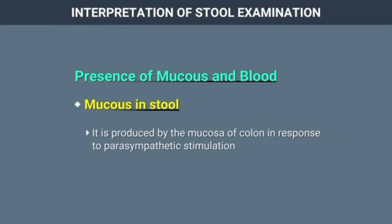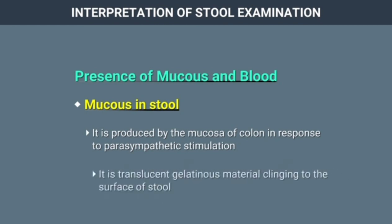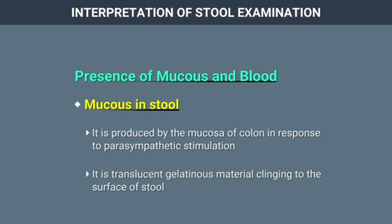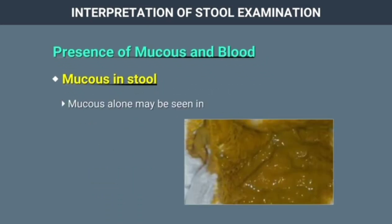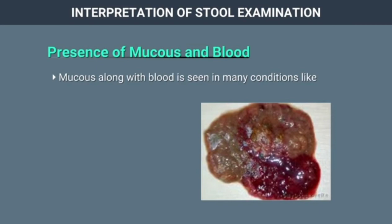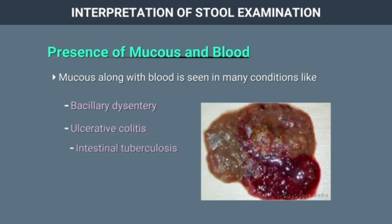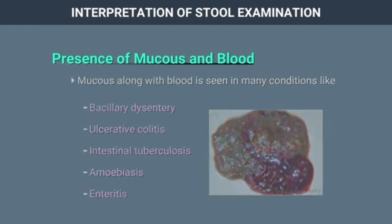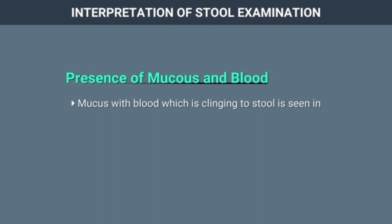Presence of mucus and blood: Mucus is produced by the mucosa of the colon in response to parasympathetic stimulation. It is a translucent gelatinous material clinging to the surface of stool. Mucus alone may be seen in severe constipation or mucus colitis. Mucus along with blood is seen in bacillary dysentery, ulcerative colitis, intestinal tuberculosis, amoebiasis, and enteritis. Mucus with blood clinging to stool may be seen in malignancies of the colon and inflammatory lesions of the rectal canal.